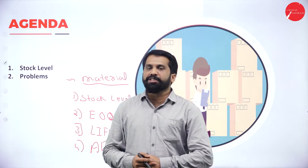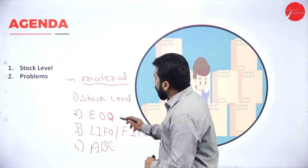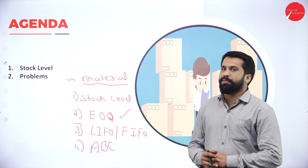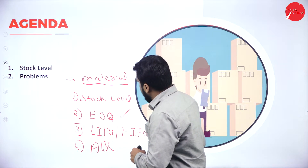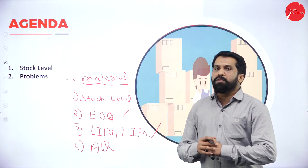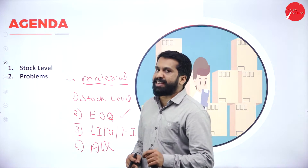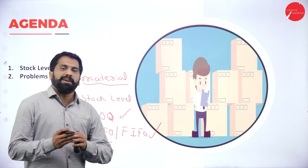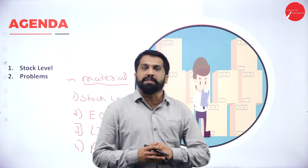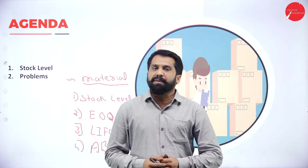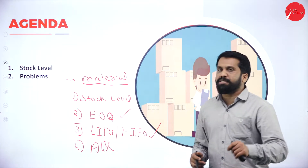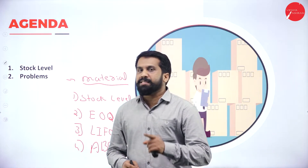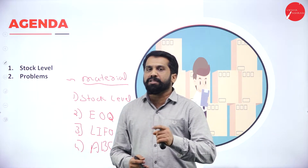Stock level is today's agenda. We will work on stock level today, and in the next session we will go for EOQ, and finally LIFO and FIFO. From this chapter, you can expect a 15-mark problem which will be your LIFO and FIFO. ABC and EOQ were already explained in session 1 — please watch session 1.